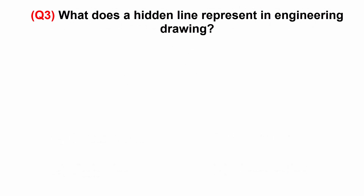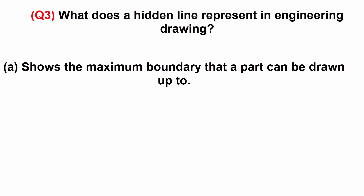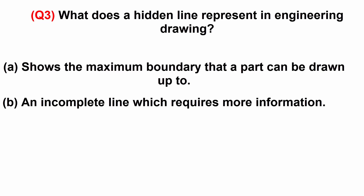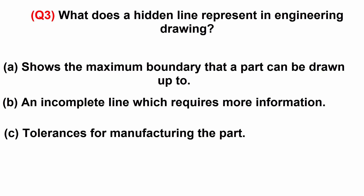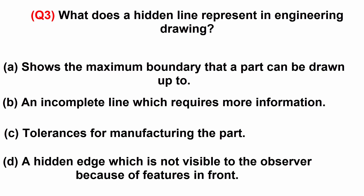What does a hidden line represent in engineering drawing? A: shows the maximum boundary that a part can be drawn up to. B: an incomplete line which requires more information. C: tolerances for manufacturing the part. Or D: a hidden edge which is not visible to the observer because of features in front.